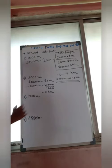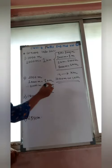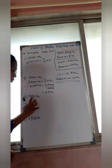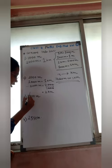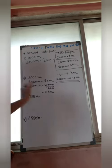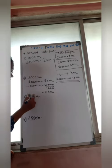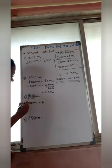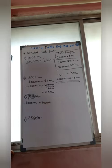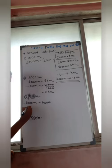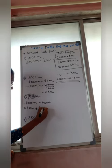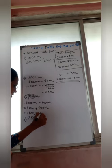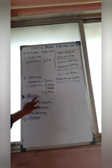Next: 1,800 meter, convert into kilometer. Count 3 digits from the right and put a slash mark — the part to the left is the kilometer part and the right is the meter part. So, expand: 1,000 meter plus 800 meter. We know 1,000 meter equals 1 kilometer, so this becomes 1 kilometer and 800 meter.